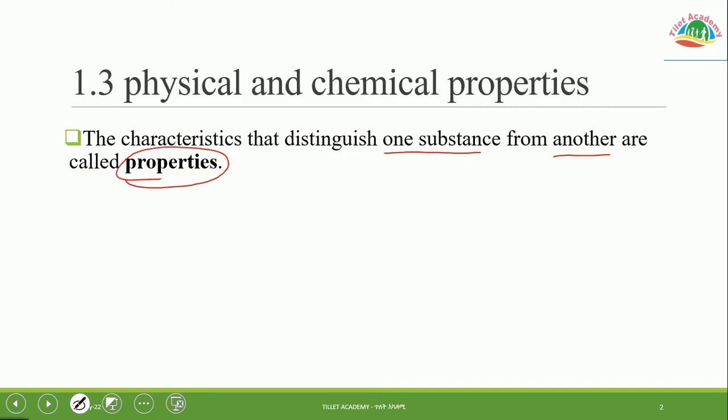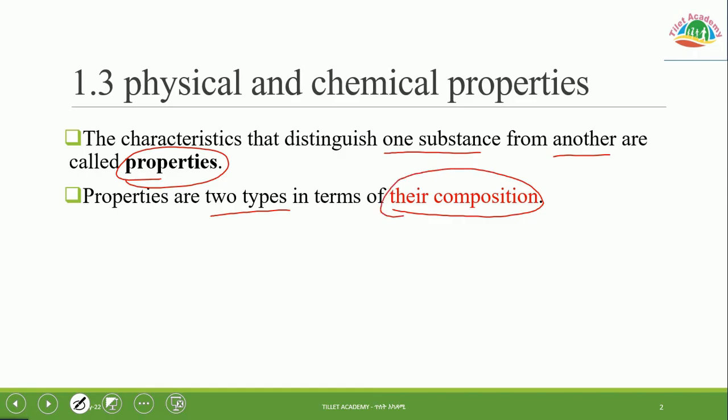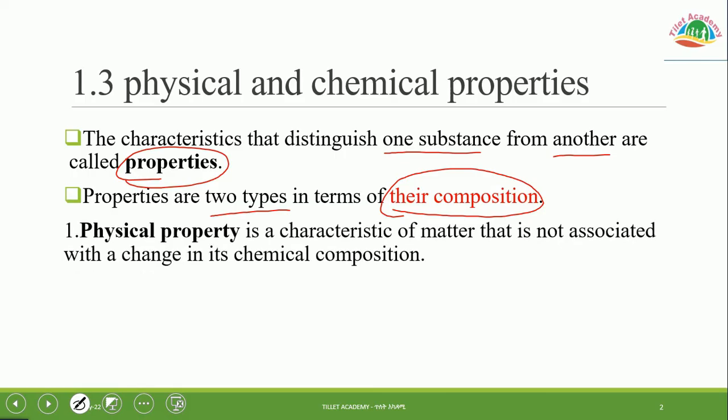So properties are two types in terms of their composition.